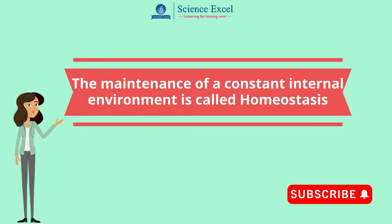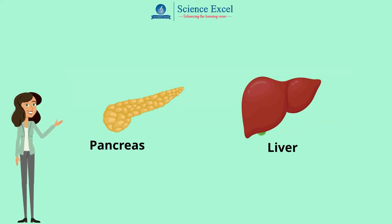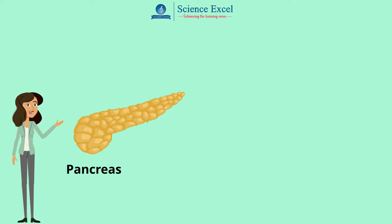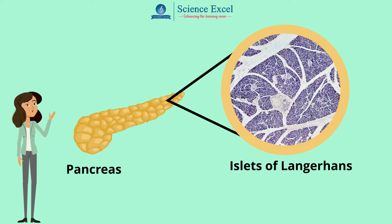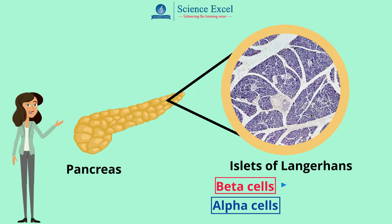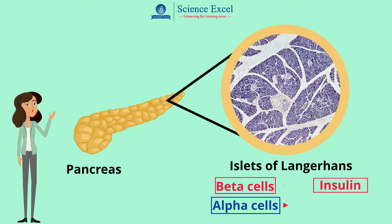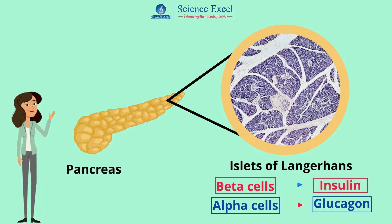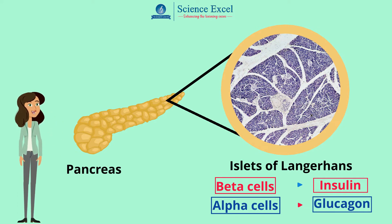This maintenance of the blood glucose concentration in our body is brought about by the pancreas and liver. Scattered throughout the pancreas are special groups of hormone-secreting cells called the islets of Langerhans. They have different kinds of cells like beta and alpha cells. Beta cells produce the hormone insulin and alpha cells produce the hormone glucagon. These hormones function in opposite ways but work together to balance our blood sugar levels, keeping them in the narrow range that our body requires.